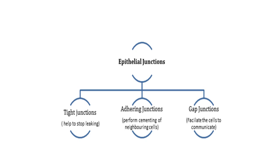Tight junctions help to stop substances from leaking between neighboring cells. Adhering junctions perform cementing to keep neighboring cells together. Gap junctions facilitate cells to communicate with each other by connecting the cytoplasm of adjoining cells for rapid transfer of ions, small molecules, and sometimes large molecules.